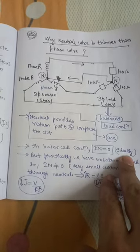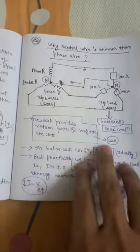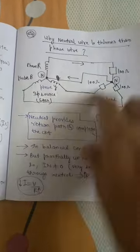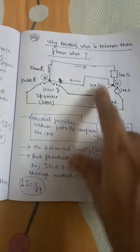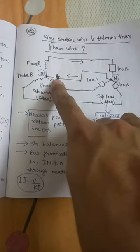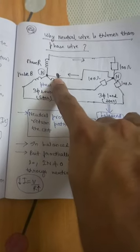But that is ideal condition. In practical case we never see a balanced condition, it will always have some imbalance in the load phase and we can see some current flowing through this neutral in unbalanced load condition.